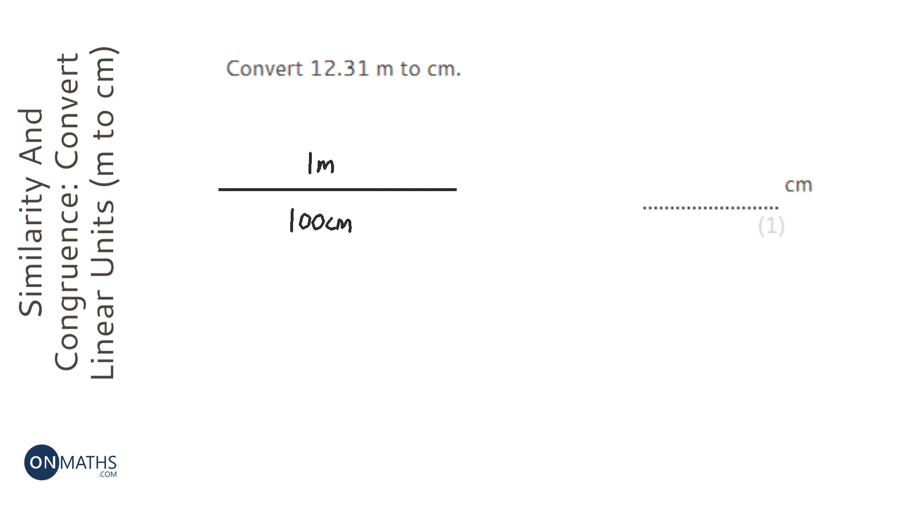So when we have 12.31 of them, we've got to figure out how we get that into centimeters. Well, what do I do to one to get to 100? Well, I times by 100, and that's how you get from meters to centimeters.